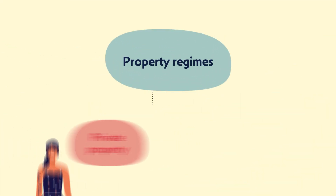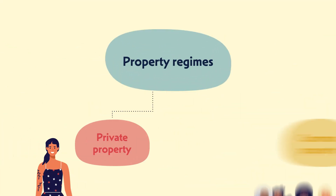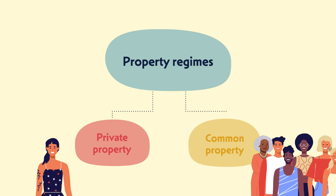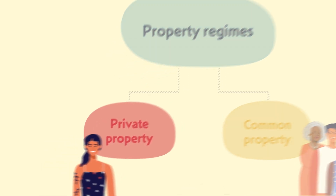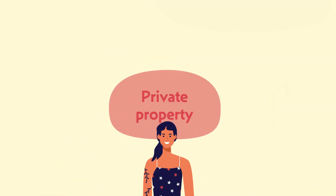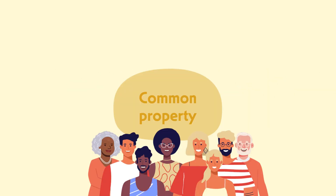Two important categories of property regimes are private property and common property regimes. Private property regimes focus on ownership by a single person or entity, while common property regimes involve ownership by several people or entities.